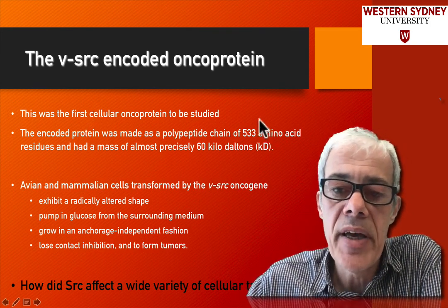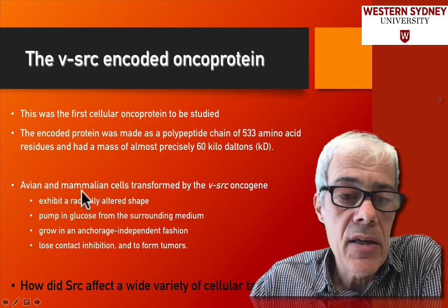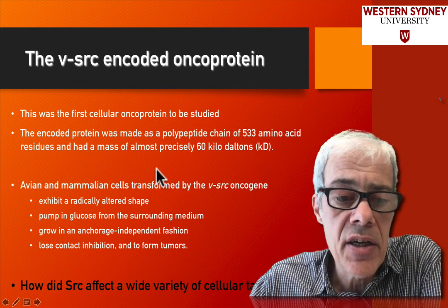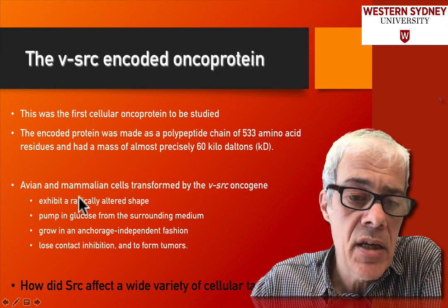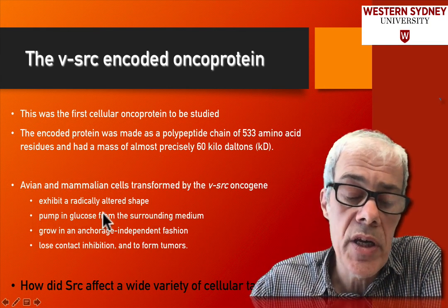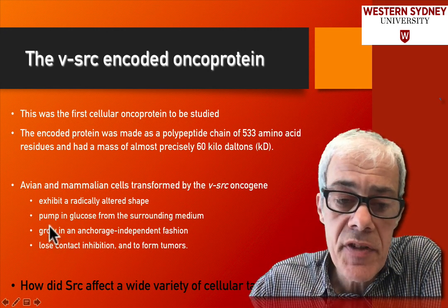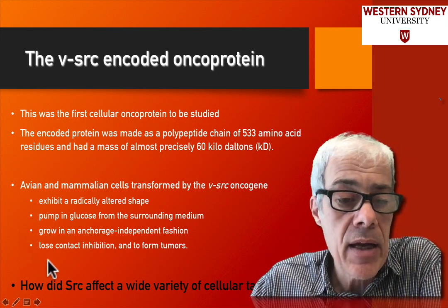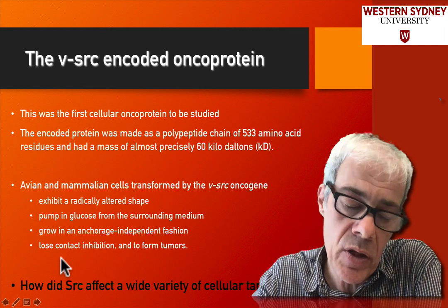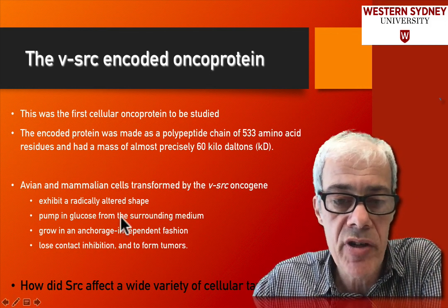Src is a protein of 533 amino acids. When you look at mutations in Src, some of the changes that occur in those cells include a different cell shape, inappropriate pumping of glucose through the plasma membrane, a change to anchorage dependency so that cells become anchorage independent, and loss of contact inhibition — meaning cell growth is no longer restricted by neighboring cells, and they can start to grow inappropriately.